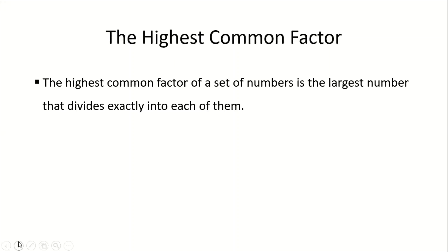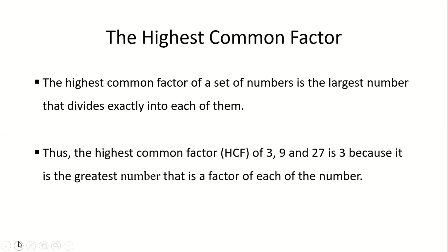The highest common factor of a set of numbers is the largest number that divides exactly into each of them. Thus, the highest common factor of 3, 9, and 27 is 3, because it is the greatest number that is a factor of each of those numbers.